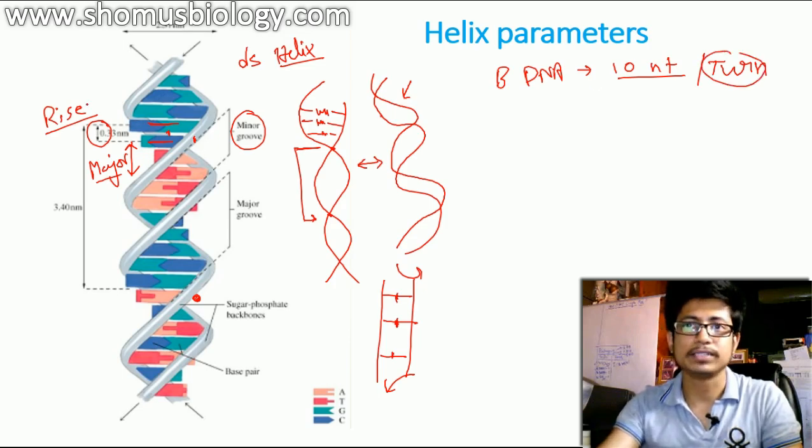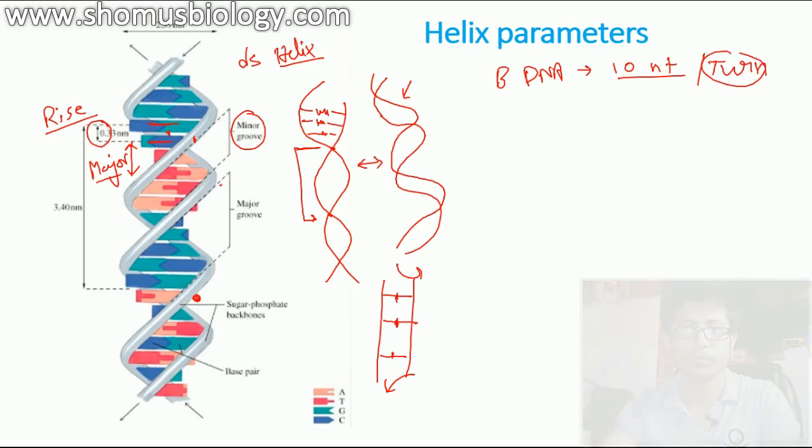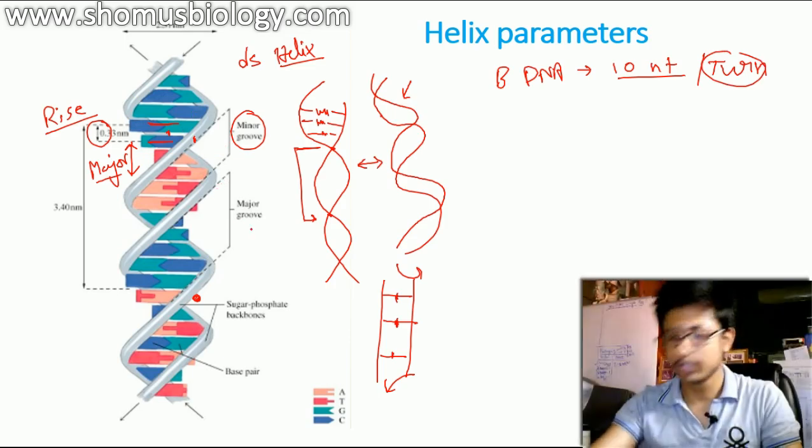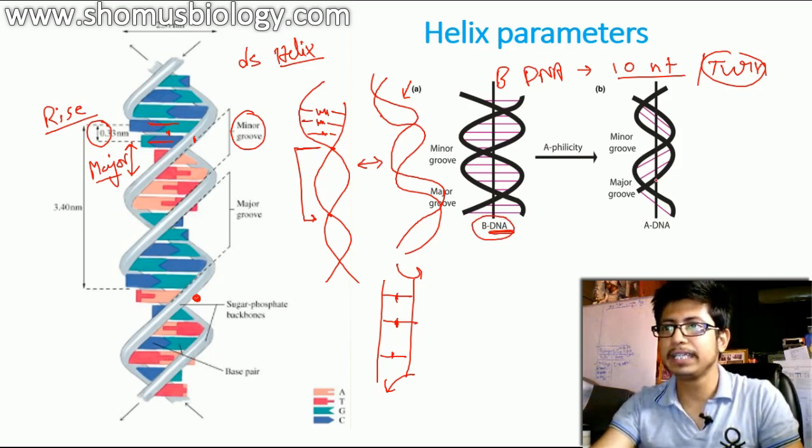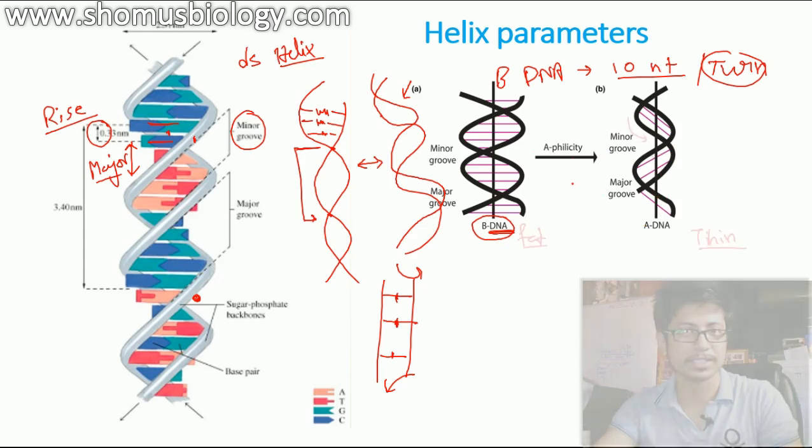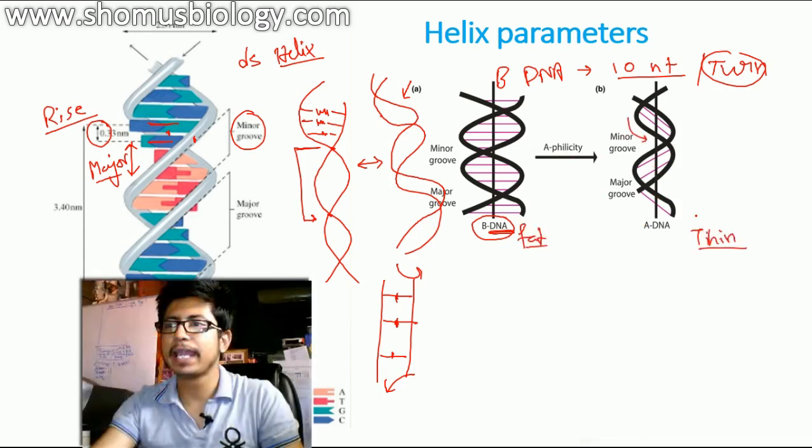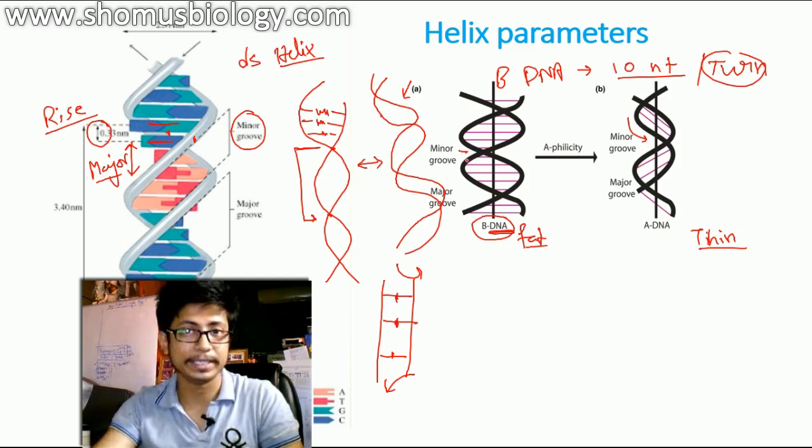So we know what is turn, we know what is rise, we also know what major groove and minor groove is. So let us look at some more differences. If you look at the B DNA structure, because it is the most common type of structure that we see, you will see the major minor groove pretty clearly. In A DNA, you will also see major and minor groove. But the difference between B and A DNA by looking at this picture, A DNA is much deeper compared to the minor groove of B DNA.